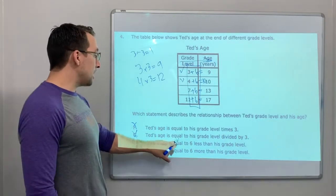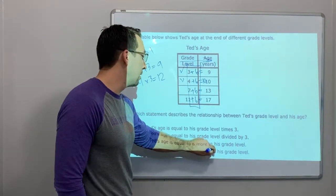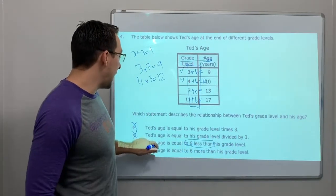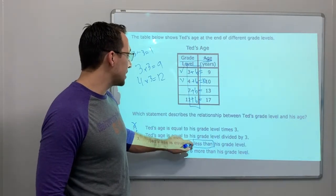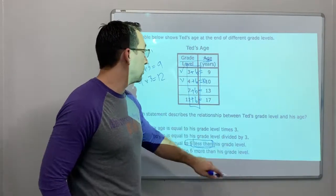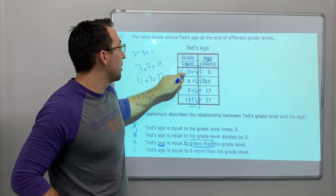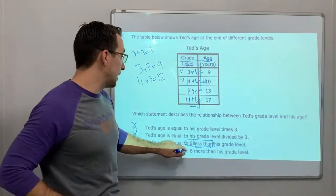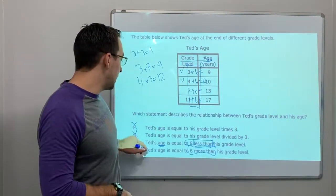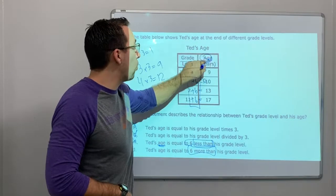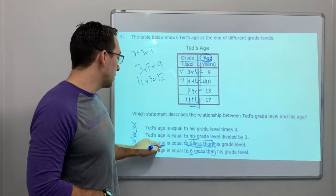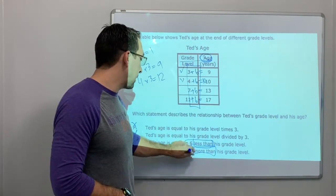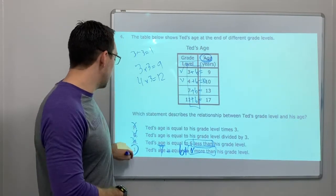Ted's age is equal to 6 less than his grade level. This was tricky. His age is equal to 6 less than his grade level. Here's his grade level, minus 6? No, it's not minus 6, it's plus 6, more than. His age is equal to, so here's his age. Y equals 6 plus X, or X plus 6. There you go, J.